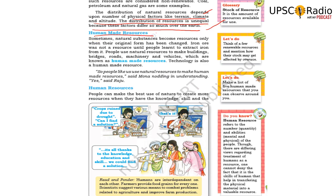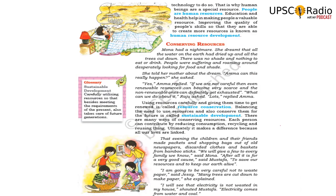Human resource and human-made resource are different. Human resource refers to people — manushulu. Human-made resource refers to things we manufacture: laptops, cameras, equipment, bikes, cars — everything manufactured is a human-made resource. People can make the best use of nature to create more resources when they have knowledge, skill, and technology. This is why human beings are a special resource.